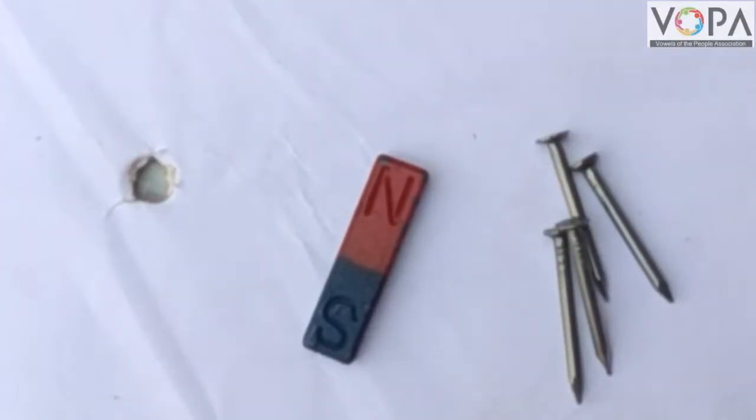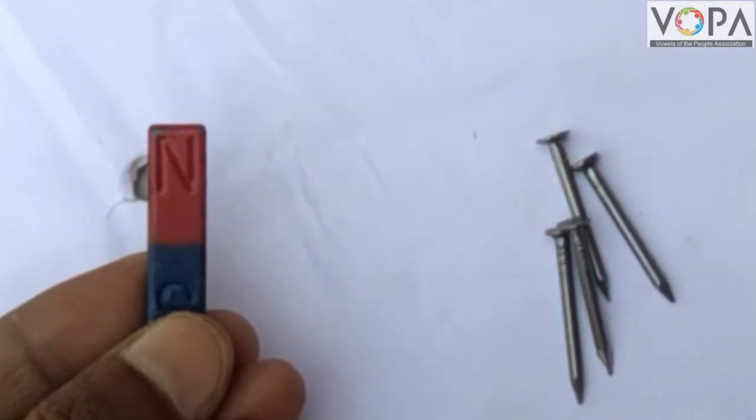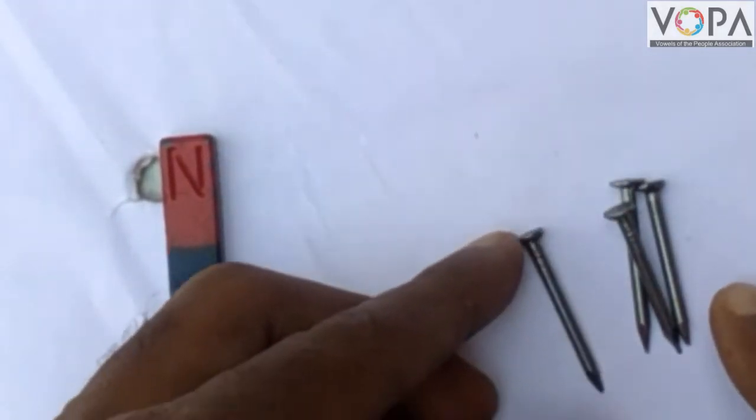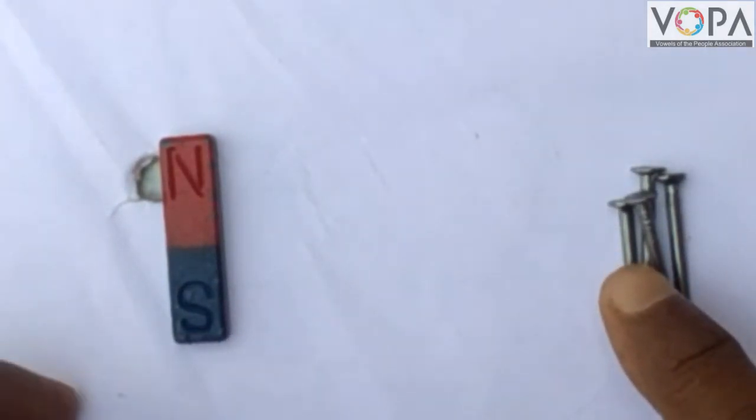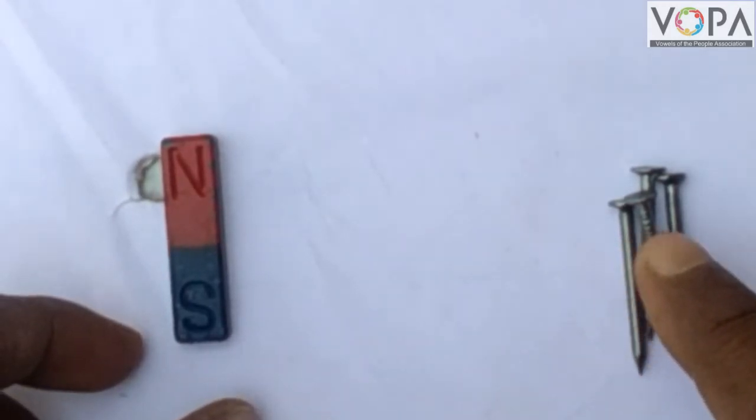Now look at this activity. Take a bar magnet - this is a bar magnet - and some iron nails. I have taken iron nails and placed them at such a distance from each other that they do not stick to each other.